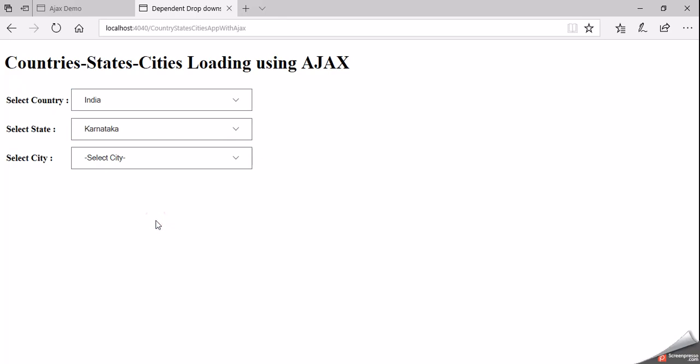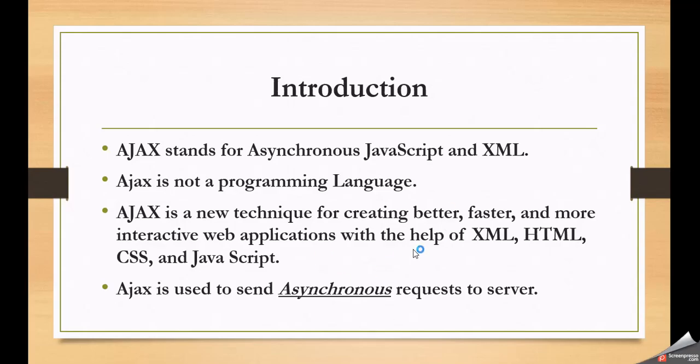To develop applications like this we need to use Ajax. Ajax is a technique which is used to develop interactive and responsive web applications, and Ajax is used to send asynchronous requests to the server. Ajax stands for Asynchronous JavaScript and XML. This is not a programming language — it is a technique to develop interactive web applications. Just now we have seen a quick demo of what is an interactive application and what is an asynchronous request.